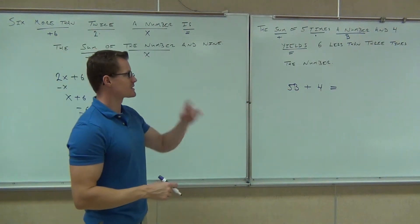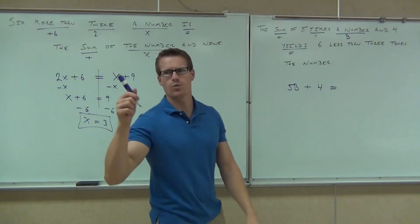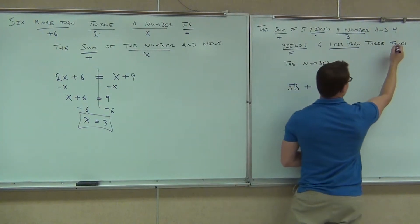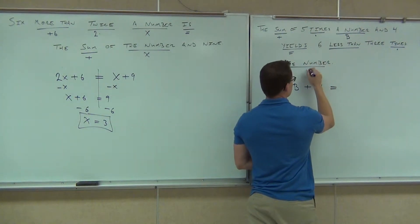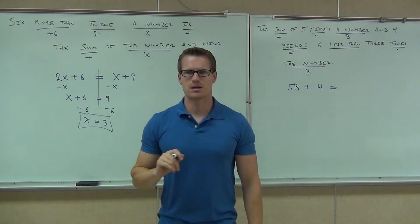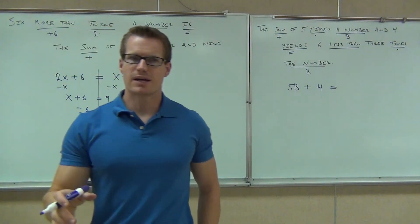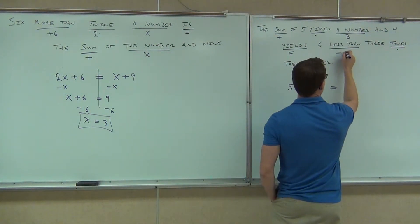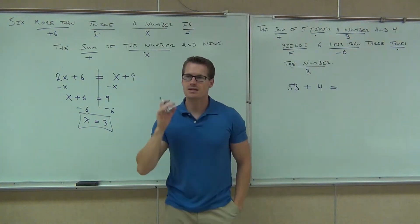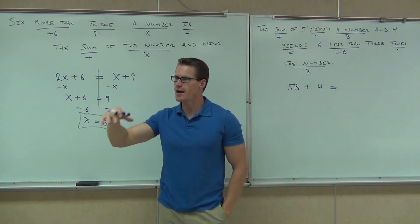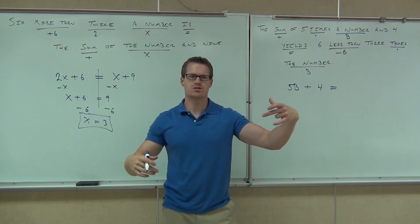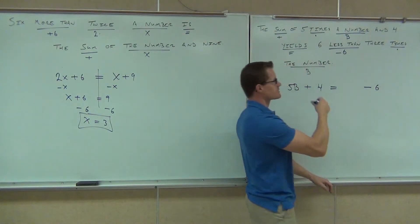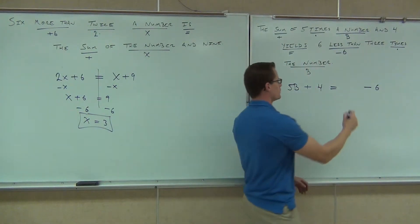The right-hand side says 'six less than three times the number.' Words that mean math: less than, three times, and that number B. What does 'less than' mean — does it mean 'six minus' or 'minus six'? It goes at the end. 'Less than' means whatever you have, you're taking six less than that. So after everything is said and done, that's going to be subtract six. Six less than what? Three times a number. So our right side is three B minus six.